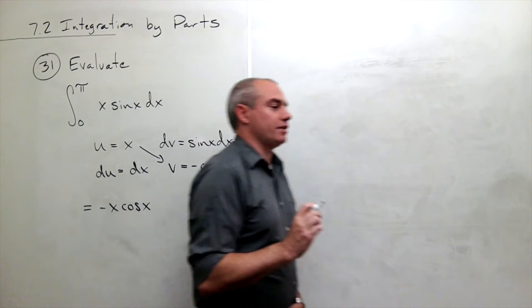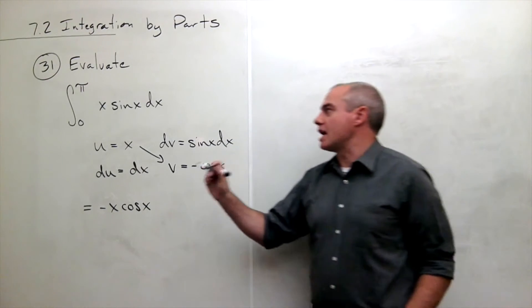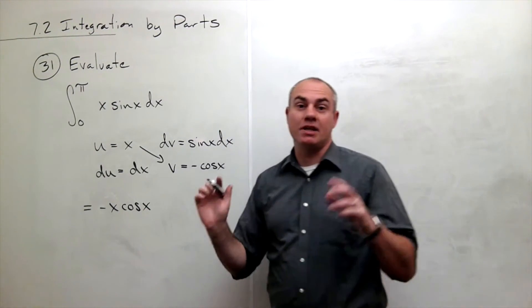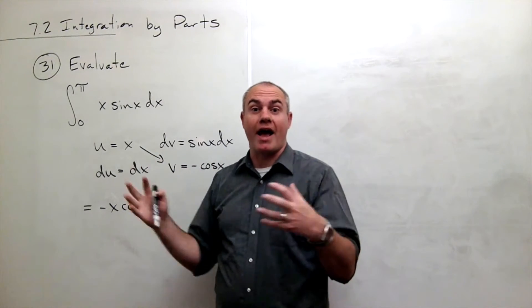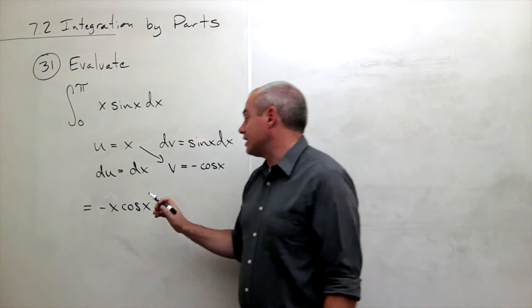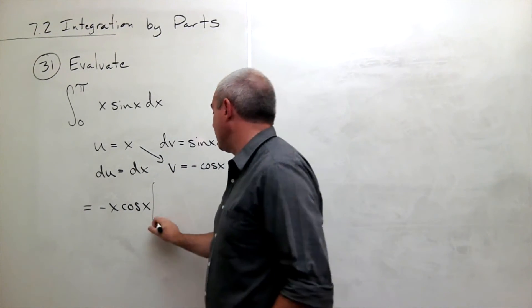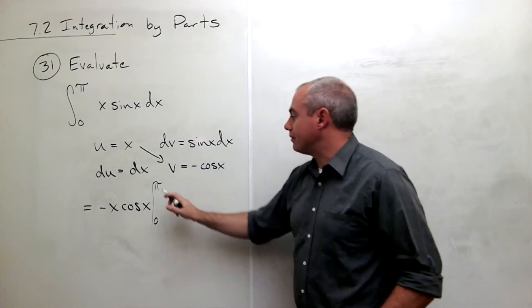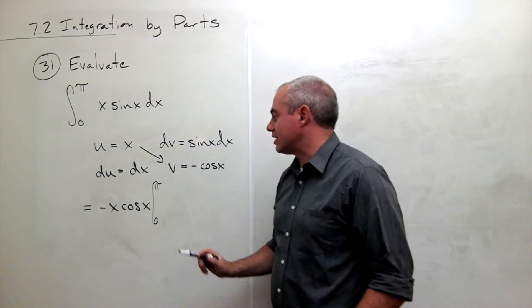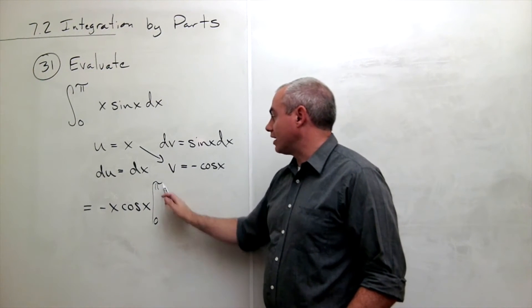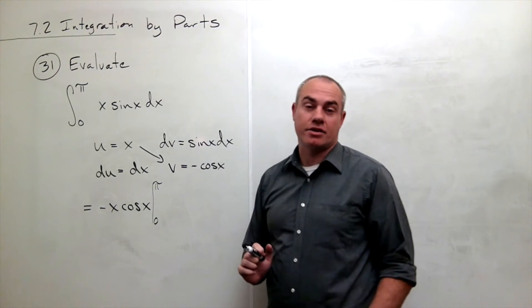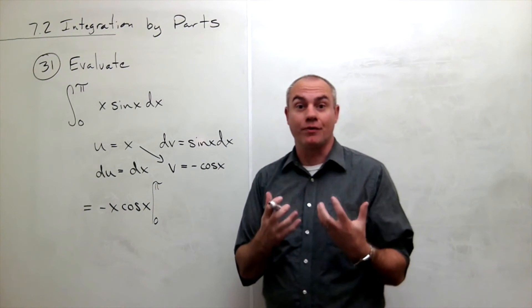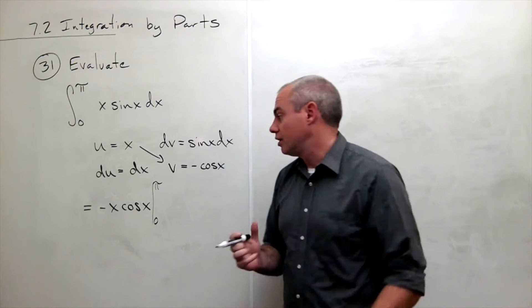But now I need to think about this for a second because since I'm taking a definite integral, once this is evaluated and brought out of the integral, it needs to be evaluated from 0 to pi. So I'm going to have to add in this evaluation sign saying, I'm going to plug in the pi minus plugging in the 0 because I've pulled some of the stuff out of that definite integral.